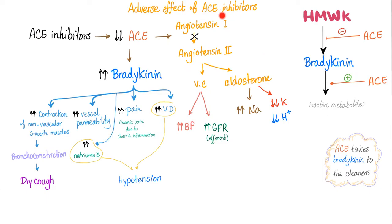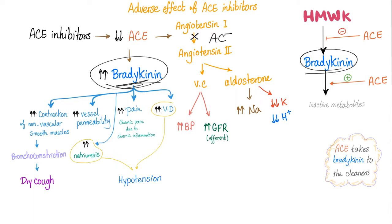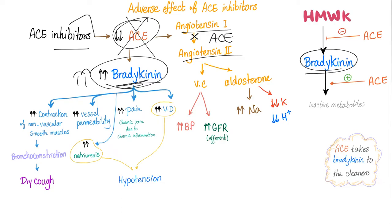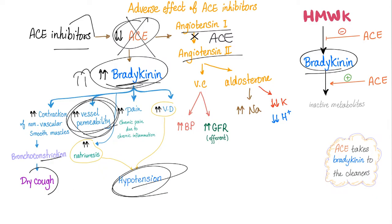ACE inhibitors are going to inhibit ACE. ACE is involved in the formation or prevention of bradykinin. ACE is also involved in the conversion of angiotensin 1 into angiotensin 2. When there is no ACE, there is lots of bradykinin, leading to dry cough due to bronchoconstriction and angioedema due to increased vessel permeability, as well as hypotension.